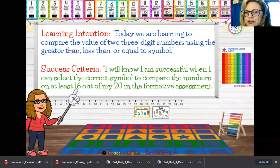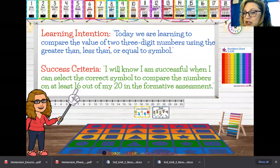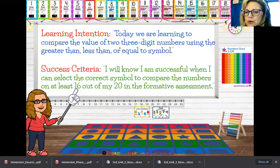Today we are learning to compare the value, or how much a number is worth, of two three-digit numbers using greater than, less than, or equal to symbols. You'll know you're successful when you can select the correct symbol to compare the numbers on at least 16 of the 20 in the formative assessment.